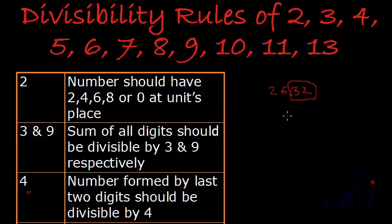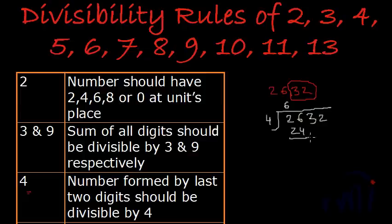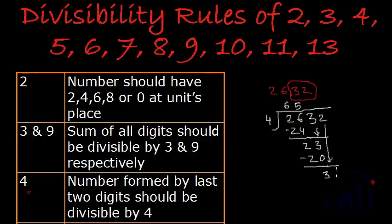Let's verify the divisibility of 2632 by 4. If we divide 2632 by 4 step by step, it eventually boils down to dividing 32, and 4 eights are 32, giving remainder 0 again. This confirms that 2632 is divisible by 4.